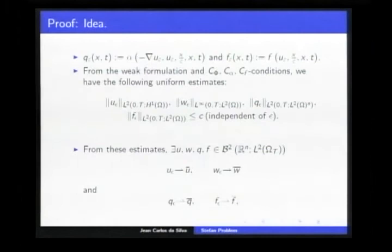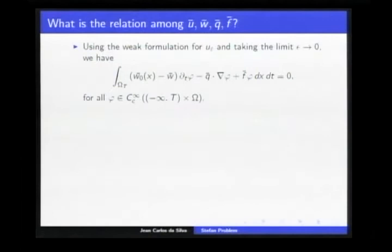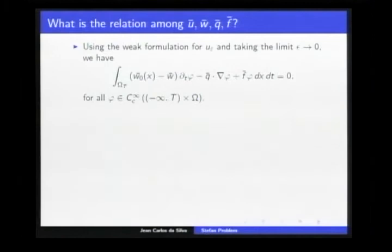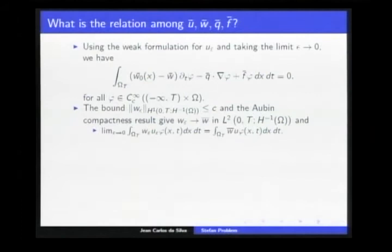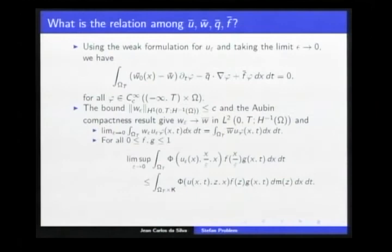We have the functions u, w-bar, q-bar, and F-bar. The relation among them is obtained by using the weak formulation for u-epsilon and taking the limit as epsilon goes to zero, giving the weak formulation. Due to the boundedness uniform in this space, we obtain a sequence uniform in epsilon, and using the compactness result with the algebra, we have strong convergence in this space. We can then deduce that these limits hold and that the function u satisfies this inequality.